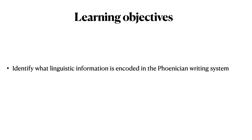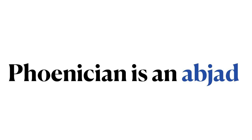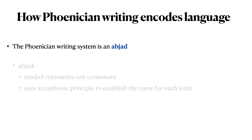Our learning objective is to identify what linguistic information is encoded in the Phoenician writing system. The ancient Phoenician writing system is an abjad — a type of writing system where each symbol represents one consonant.